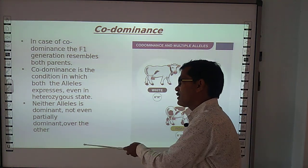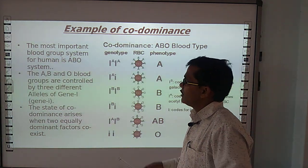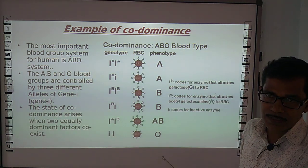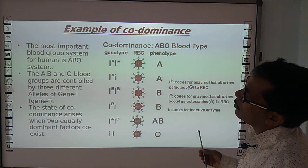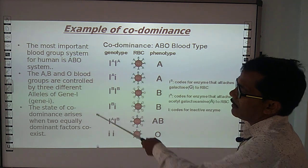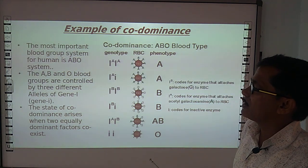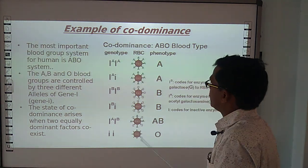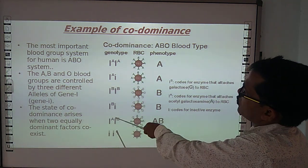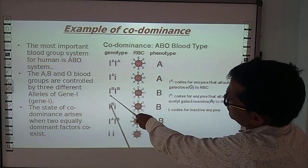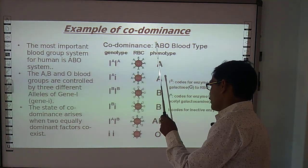The best example of co-dominance is the ABO blood group system — blood groups A, B, AB, and O. The ABO blood groups are controlled by three different types of alleles of gene I. The state of co-dominance arises when two equally dominant factors co-exist. There are three allelic forms: I-A, I-B, and i (small i). These three alleles form six genotypes, producing the four ABO blood group phenotypes: A, B, AB, and O.